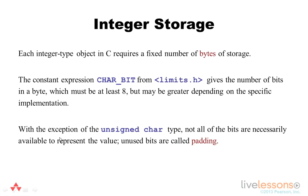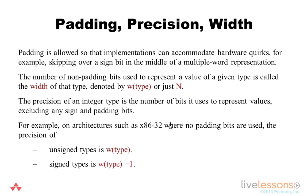With the exception of the unsigned character type, not all the bits are necessarily available to represent the value, and any unused bits are referred to as padding. Padding is allowed by the standard so that implementations can accommodate various hardware quirks, for example skipping over a sign bit in the middle of a multiple-word representation.